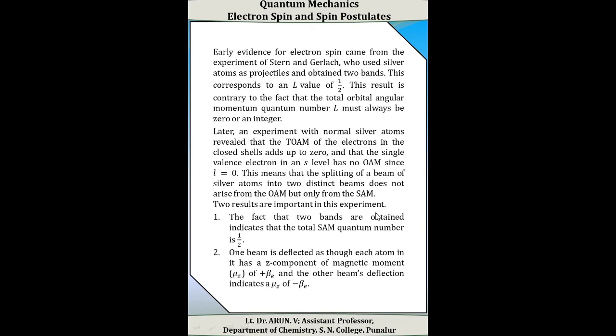Early evidence for electron spin came from the experiment of Stern and Gerlach. They used silver atoms as projectiles in their experiment and obtained two bands. These bands correspond to the l value of one-half. This result is contradictory to the fact that the total orbital angular momentum quantum number l must always be zero or an integer.